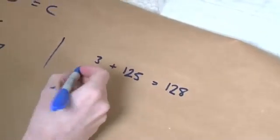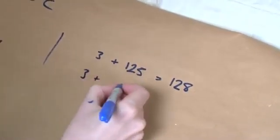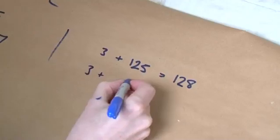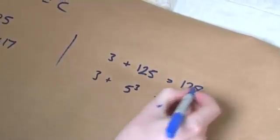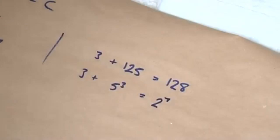Let's just check they don't share any factors then. Well, that's 3. This is 5 cubed. And this, 128, is 2 to the power 7.